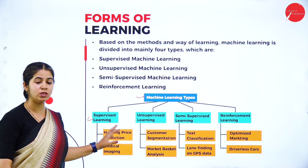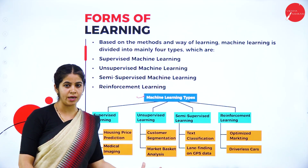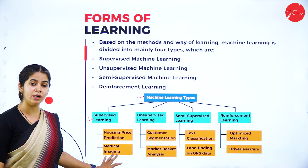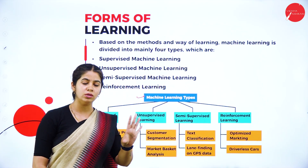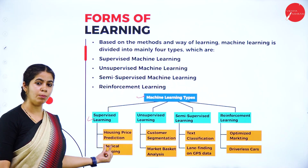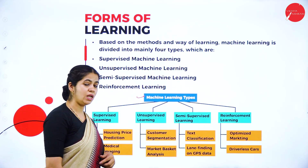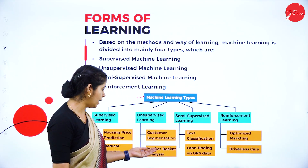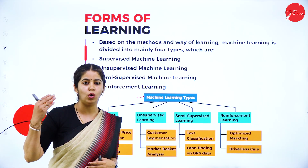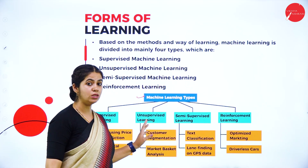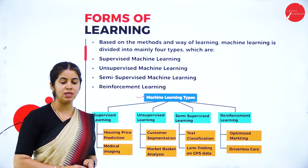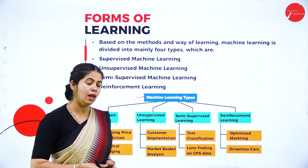Here are examples: supervised machine learning — housing price prediction and medical imaging. For unsupervised learning — customer segmentation and market basket analysis, such as analyzing stock markets or online shopping. Semi-supervised learning — text analysis and lane finding for GPS data. Reinforcement learning — optimizing the market and driverless cars. The best relatable example for machine learning is online shopping: whenever you search for clothing or shoes, the next time you open the site it will suggest what you previously searched for.